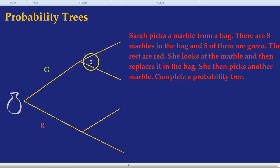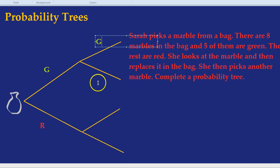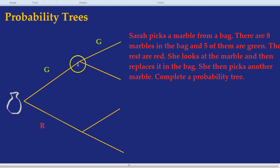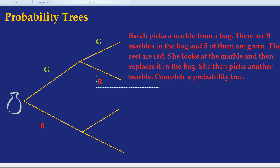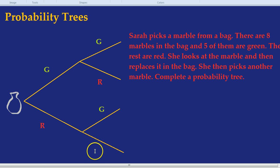The second split is her second choice, the second time she picked out of the bag. Again the higher branch represents her picking a green, and in this case it will be her picking a green again because she's already picked a green to get there. The lower branch is red. This branch represents green and the bottom branch represents red.